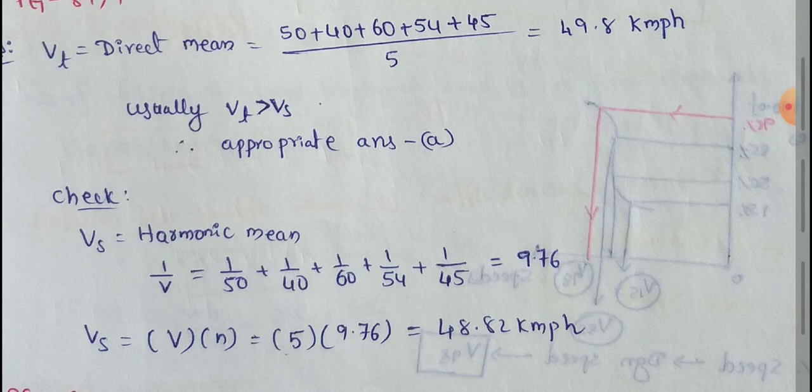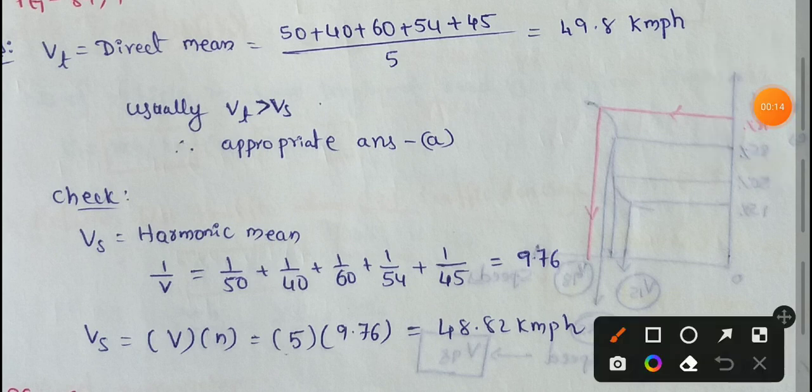For example, given data, we have five observations, which means spot speeds: 50, 40, 60, 54, and 45.